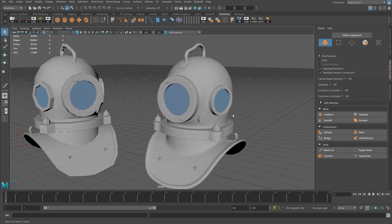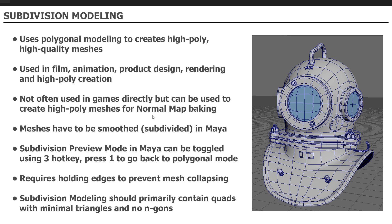This high poly subdivided mesh could be used for baking smooth detail down to the low poly mesh by generating a normal map, or used for a different production pipeline: animation, film, or product design. One last important thing about subdivision modeling: most of your models should primarily contain quads with minimal triangles and no n-gons. Triangles and n-gons on a subdivided mesh tend to collapse geometry and create creases or pinching. This is an important part of specific production pipelines and something you should eventually learn.